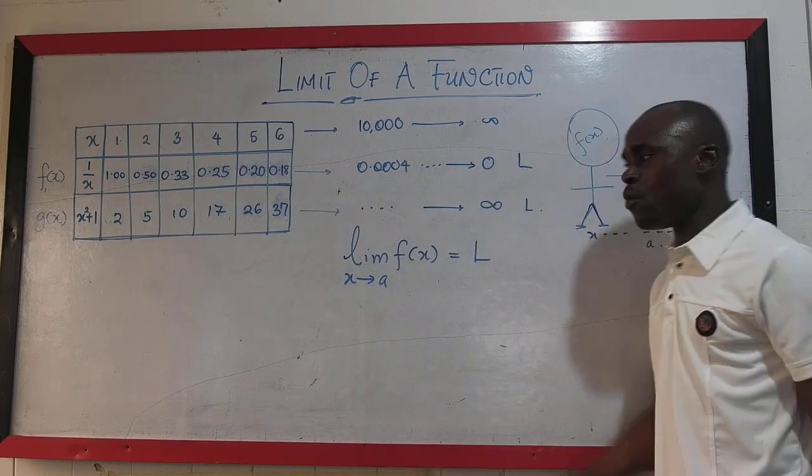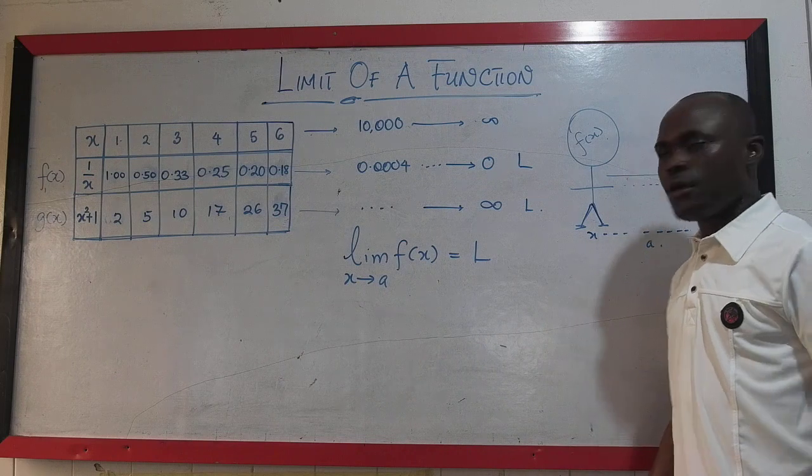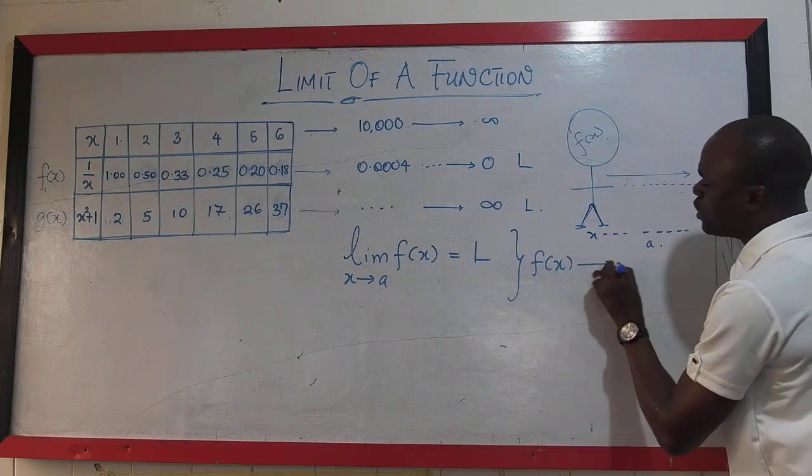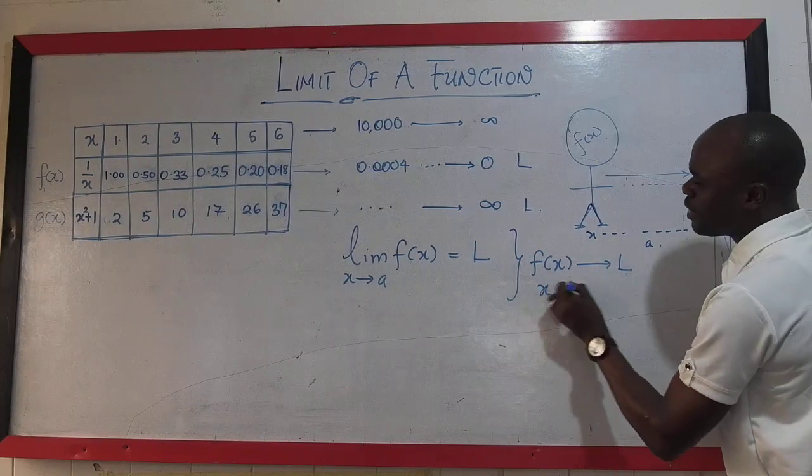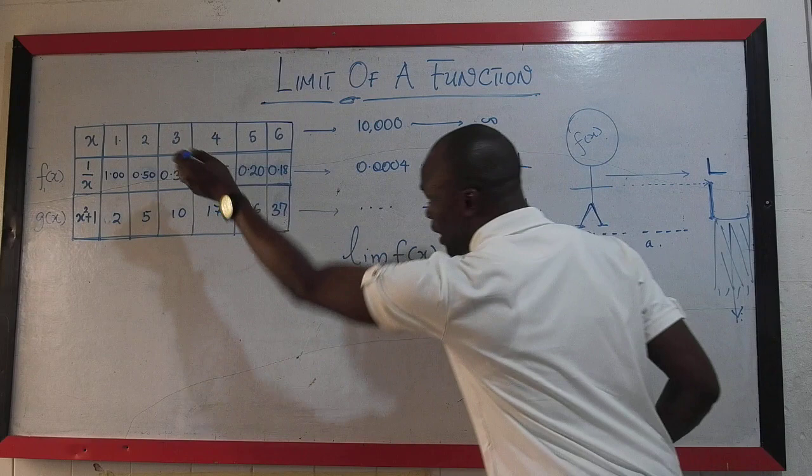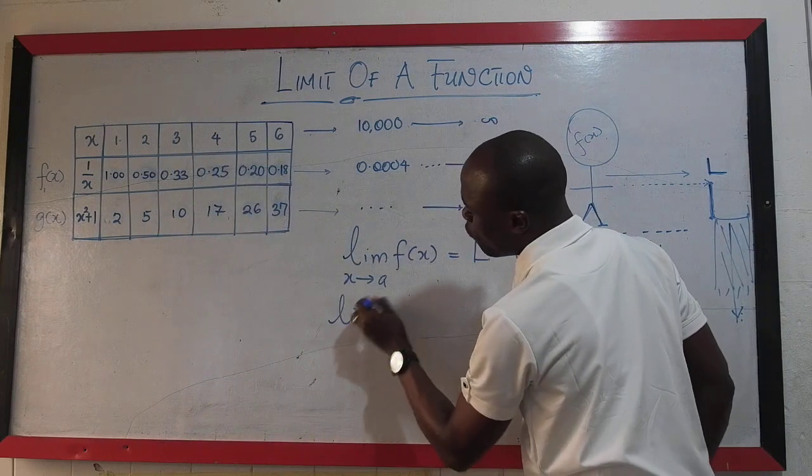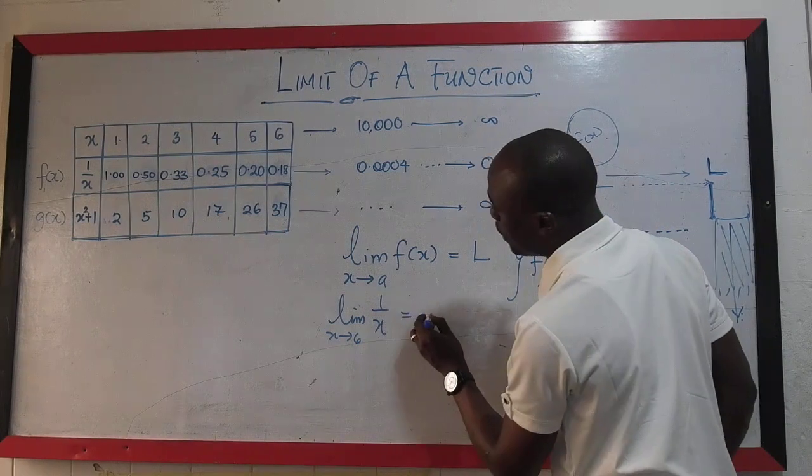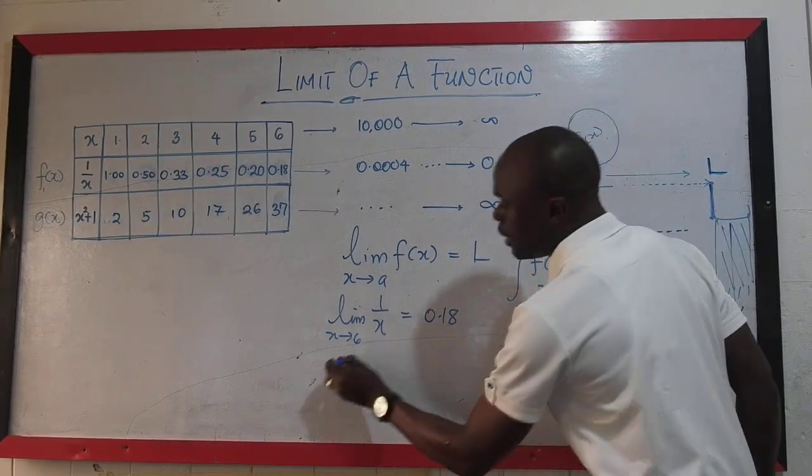So we are saying that the limit of the function f of x is approaching L as x approaches A. This is independent variable, while this is independent variable. So what we are saying here is that f of x does not approaches the limit as x approaches the independent variable. For instance,